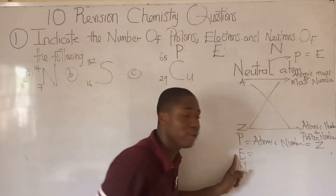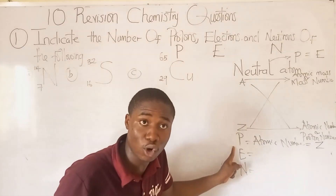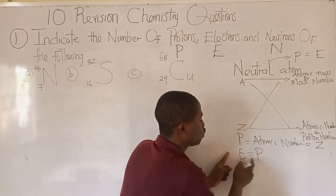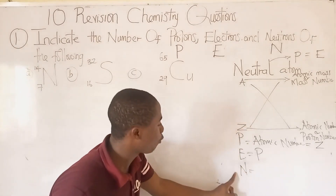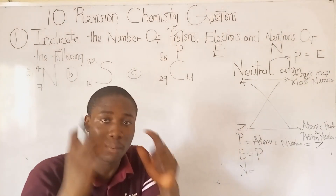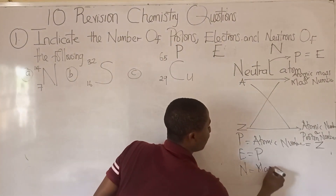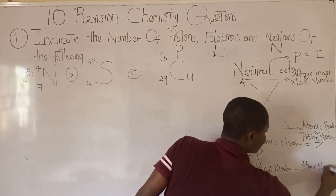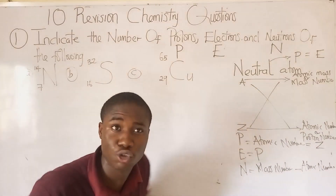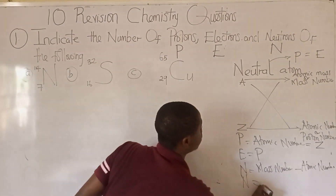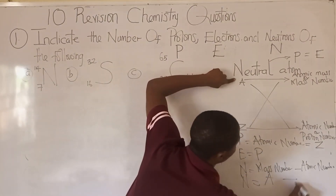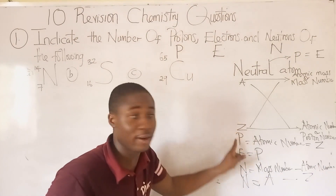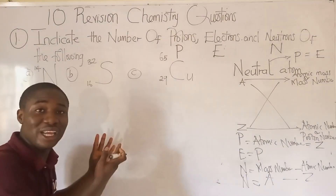For a neutral atom, electron number equals proton number, so whatever value we have there is also our electron number. For the neutron number, we calculate it by doing mass number minus atomic number — that's the formula. Mass number is denoted by A and atomic number by Z, so neutron number equals A minus Z.